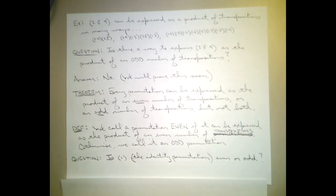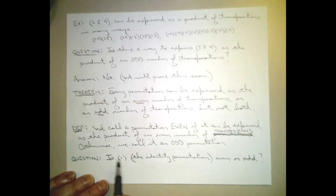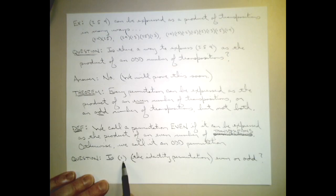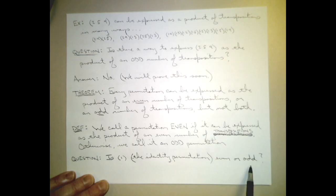So here's a question for you. Consider the identity permutation - the one that sends every element to itself. Is the identity permutation even or is it odd? I'm going to ask you to pause the video for just a moment and think about this for a couple of minutes and then come back.